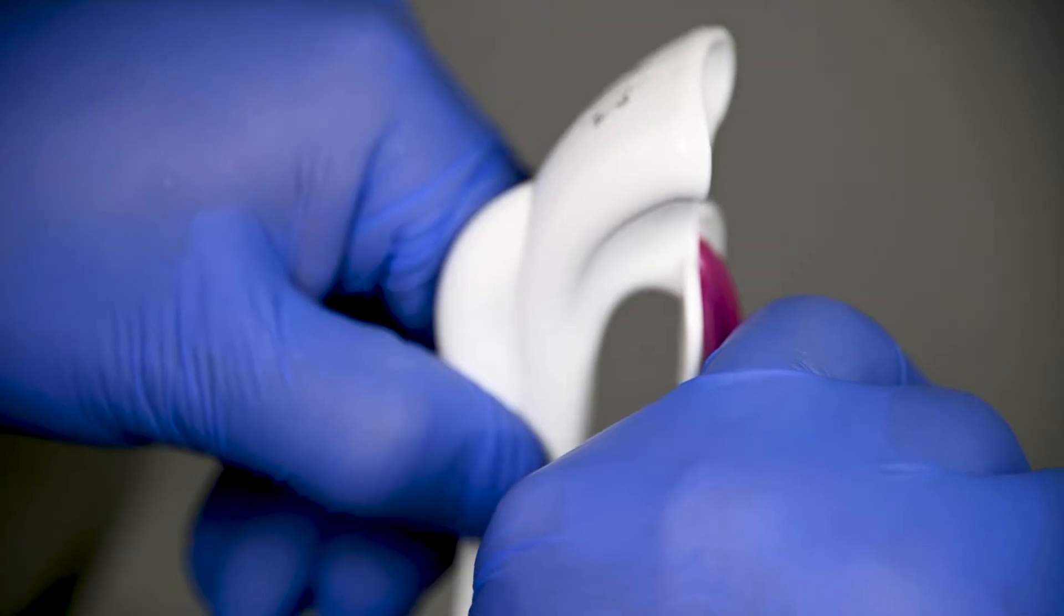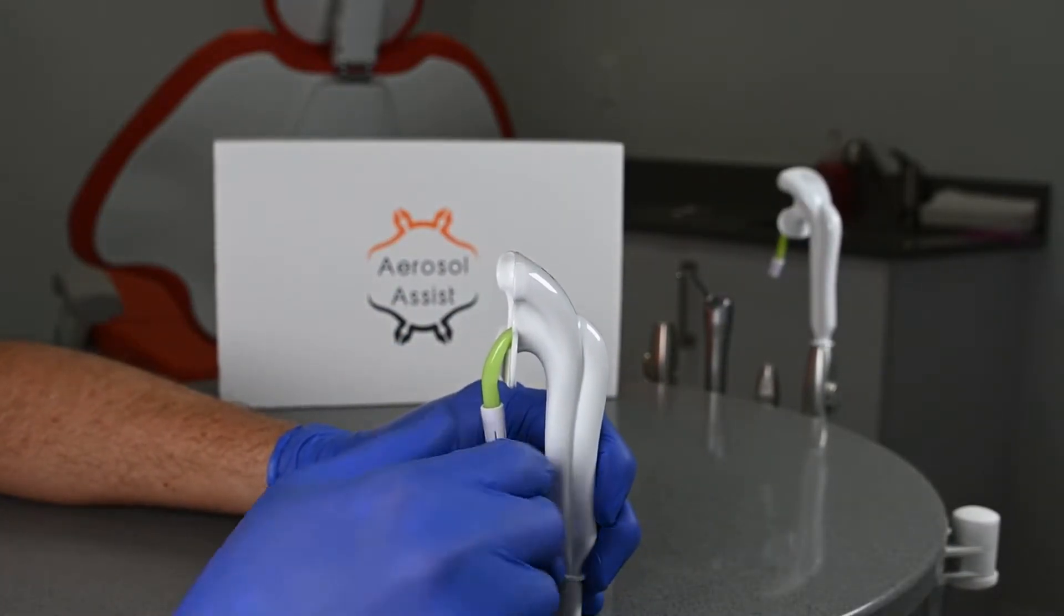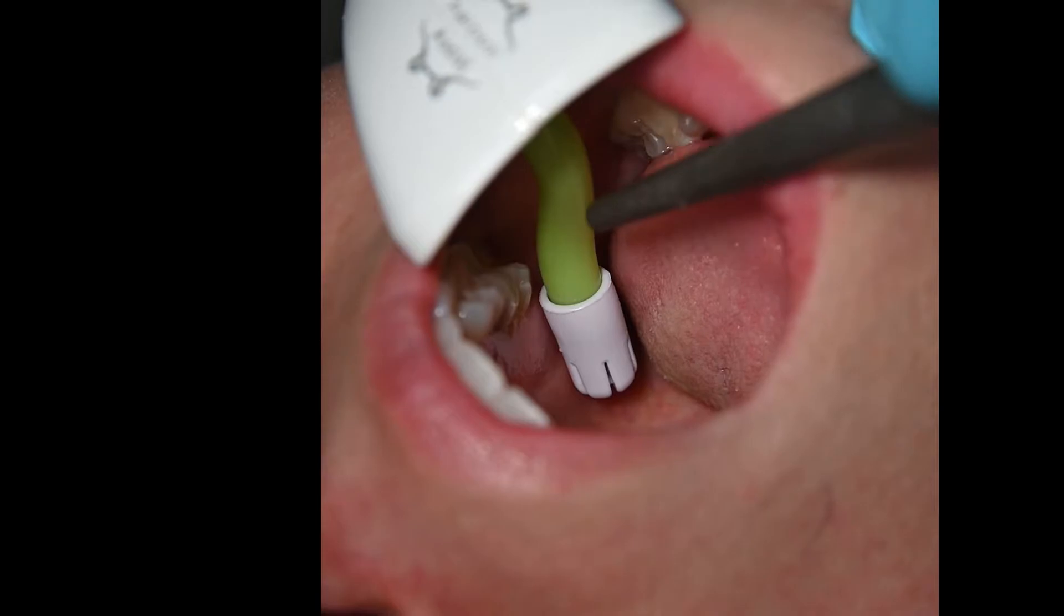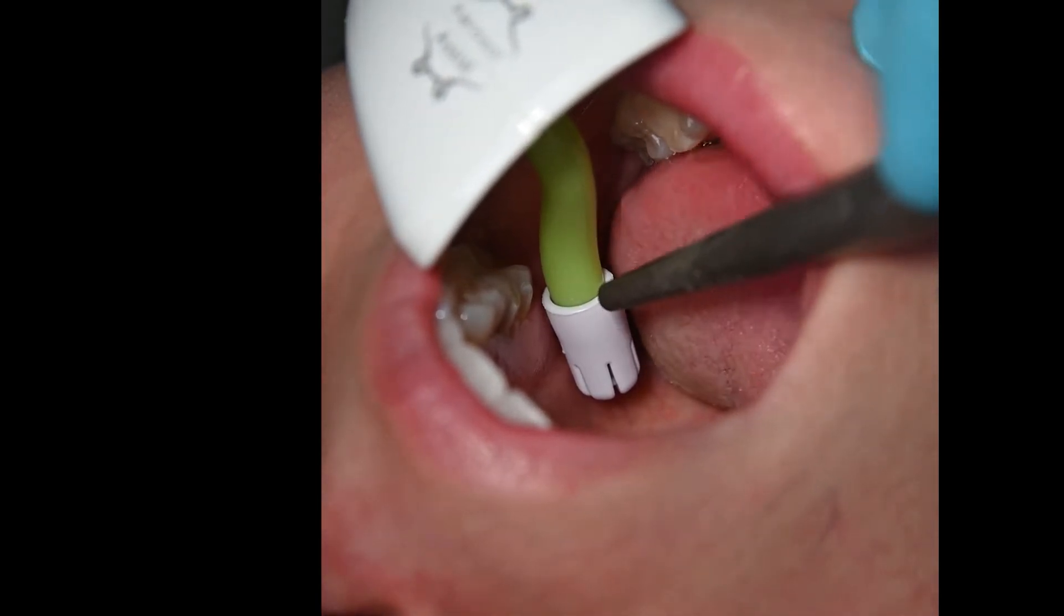You can now change the position of the saliva ejector to fit in the most comfortable position for the patient. This starting position will work on most patients and is able to avoid gag reflexes by not touching any gums, teeth, or other anatomical landmarks.